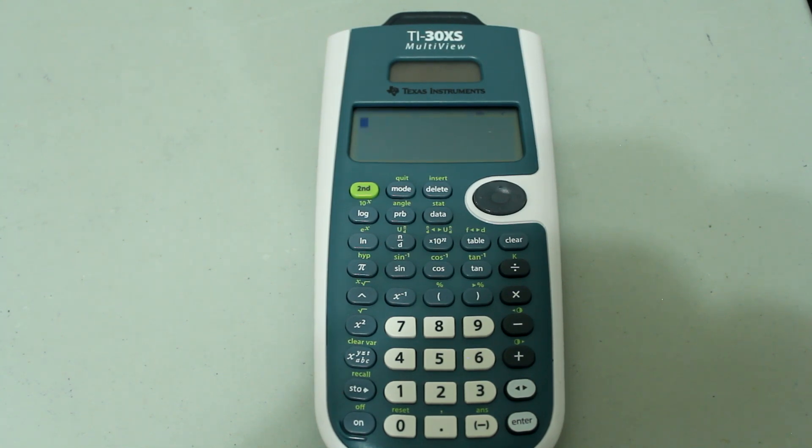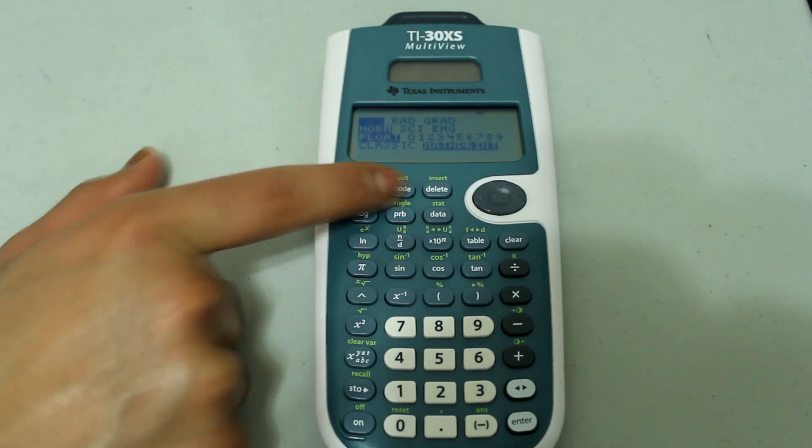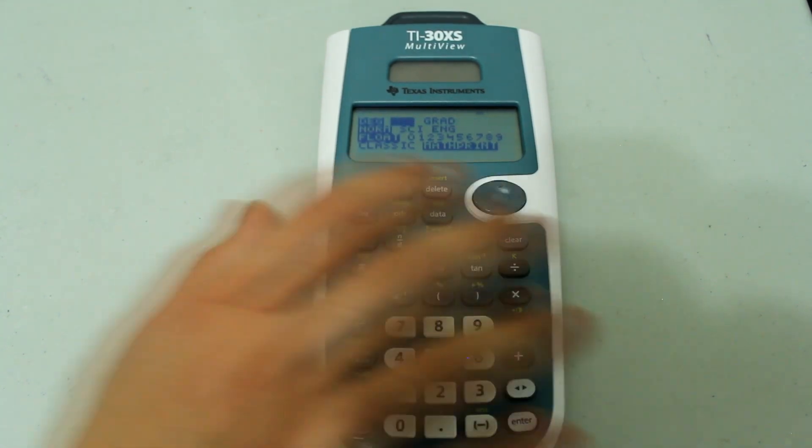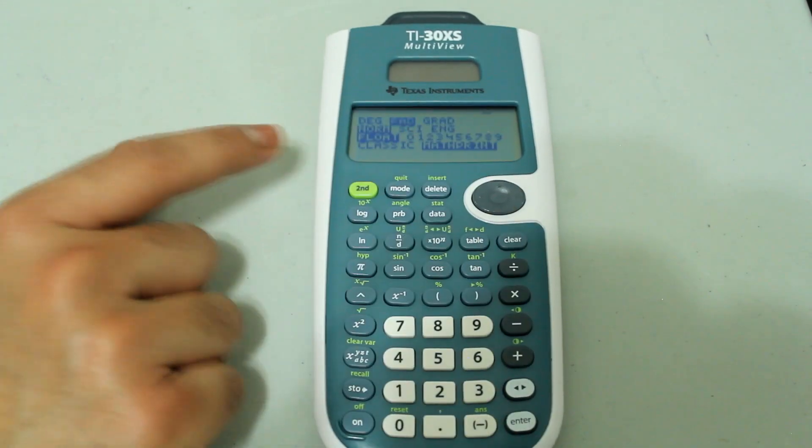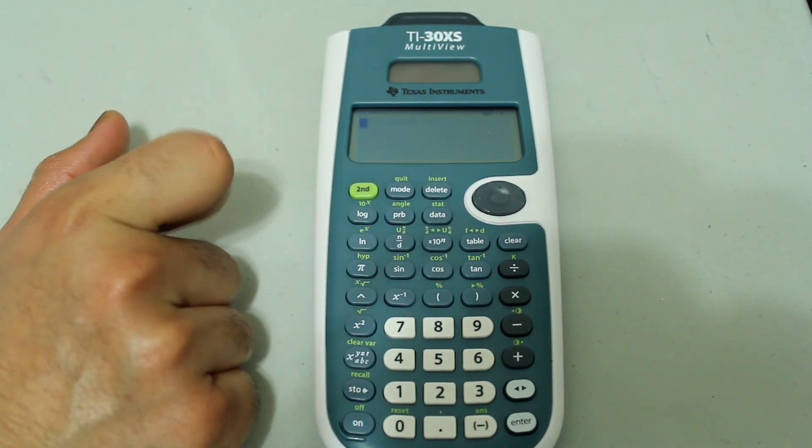Let's say we want to convert 30 degrees to radians. Since we want our end answer to be in radians, we have to be in radian mode. So press the mode button and arrow over to rad and press enter, press second mode to quit.